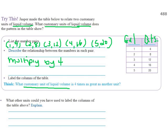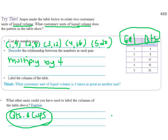And then it says, what other units could you have used to label the columns above? Well, there's more than just gallons that is four times bigger than quarts. It could have also been quarts are four times bigger than cups. So there's a possibility of two things that it could be. Gallons and quarts - gallons are four times larger than quarts. And quarts and cups - quarts are four times larger than cups.